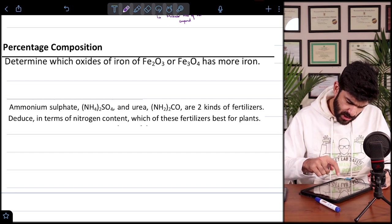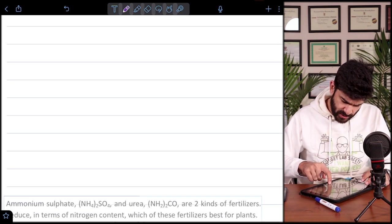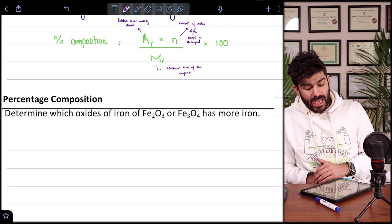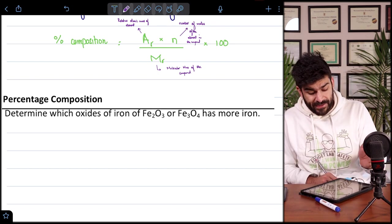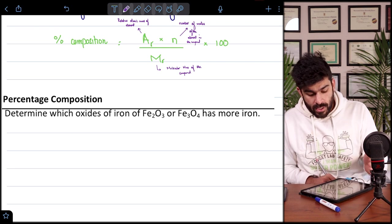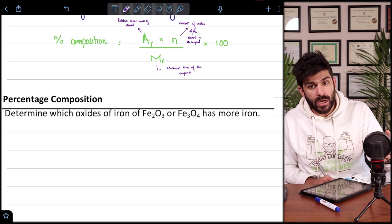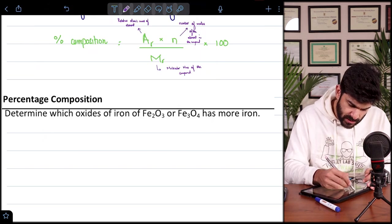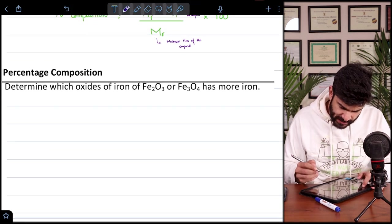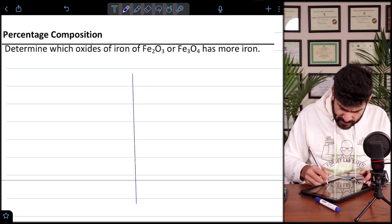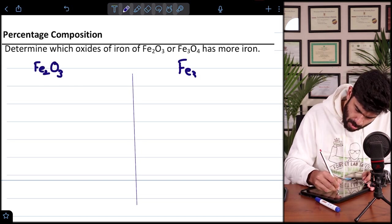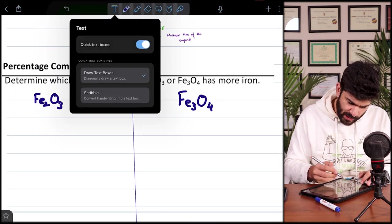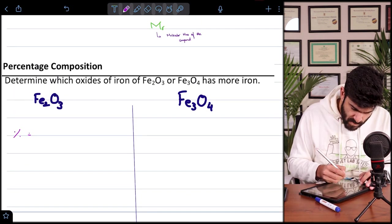We have two different questions. Let's solve the first one first. Determine which oxides of iron, which is Fe2O3 and Fe3O4 has more iron. We will be using the same formula for this purpose. Let's split the screen and talk about both the irons here. We have the same formula, we'll just put in the values. Iron, we know that the atomic mass of iron is 56.